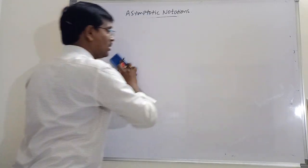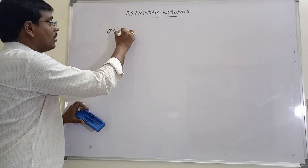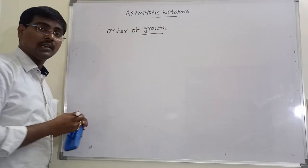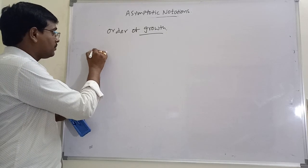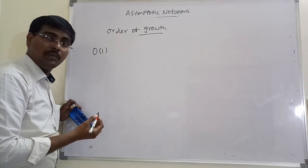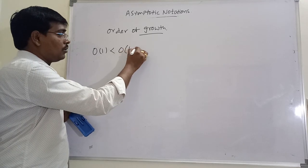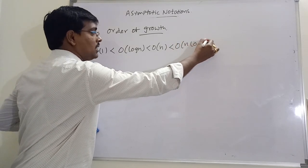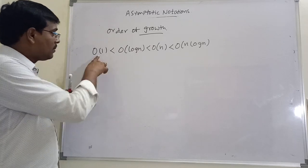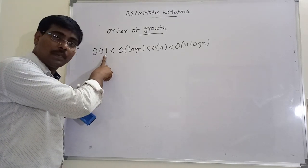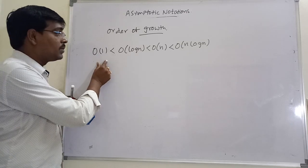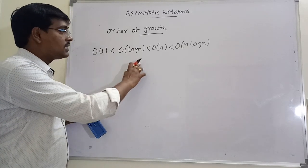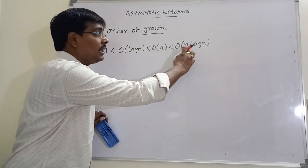The main important thing is the order of growth — in which order the time complexities are increasing. Big O(1) is the minimum time complexity. Then Big O(log n), Big O(n), Big O(n log n). For example, assume n = 8: O(1) is constant, O(log n) = 3, O(n) = 8, O(n log n) = 24.